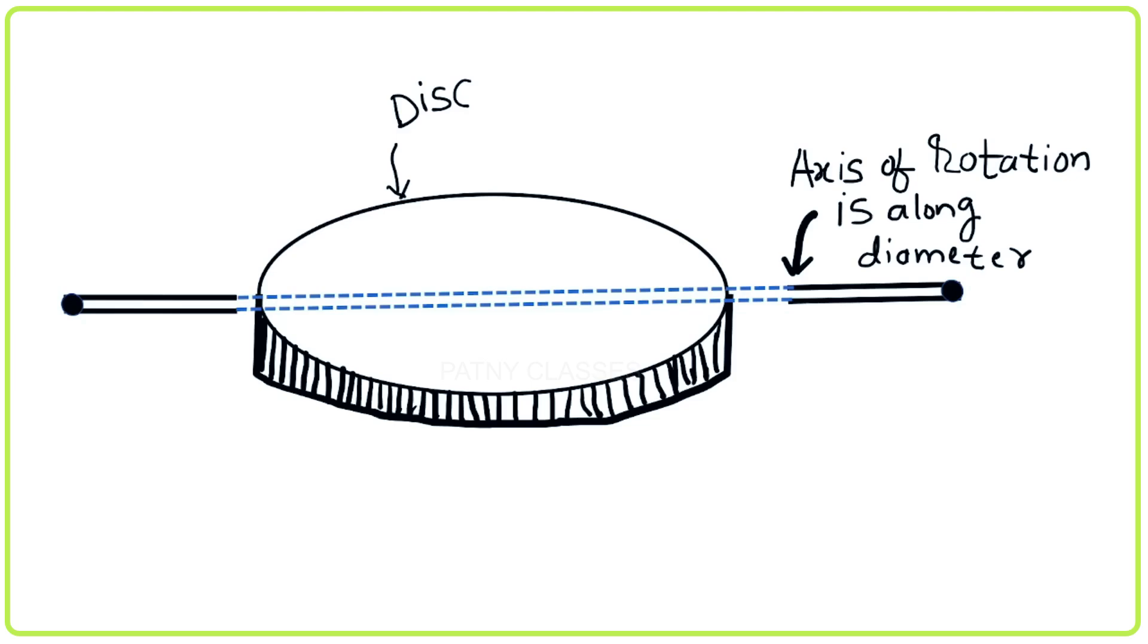The axis of rotation does not always pass through the center of mass or the center of the body. It can pass through any point. In this diagram the axis of rotation is along the diameter of the disc.